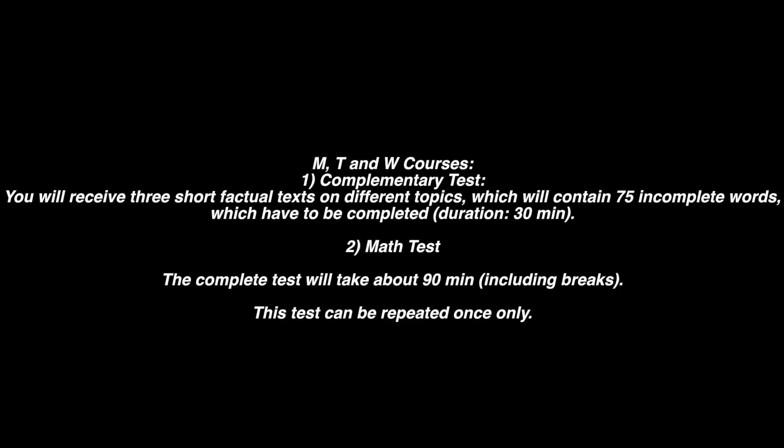Let's talk about the Aufnahmeprüfung in more detail. Basically it's about German language — around 60% — and the rest is maths, like 11th and 12th grade level maths, including calculus. Some universities also ask you to do a science examination covering physics and chemistry, but those are very few. So mainly it's maths and German.